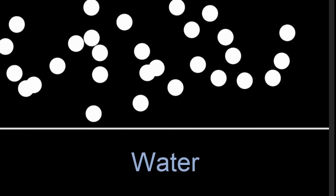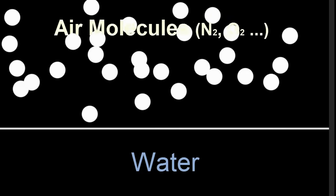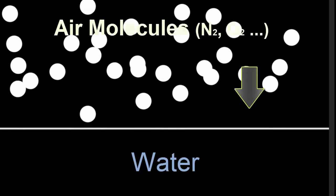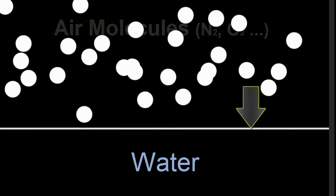We can think of atmospheric pressure as the collisions of air molecules against the surface of the water. That's the pressure. The more collisions, the greater the pressure.